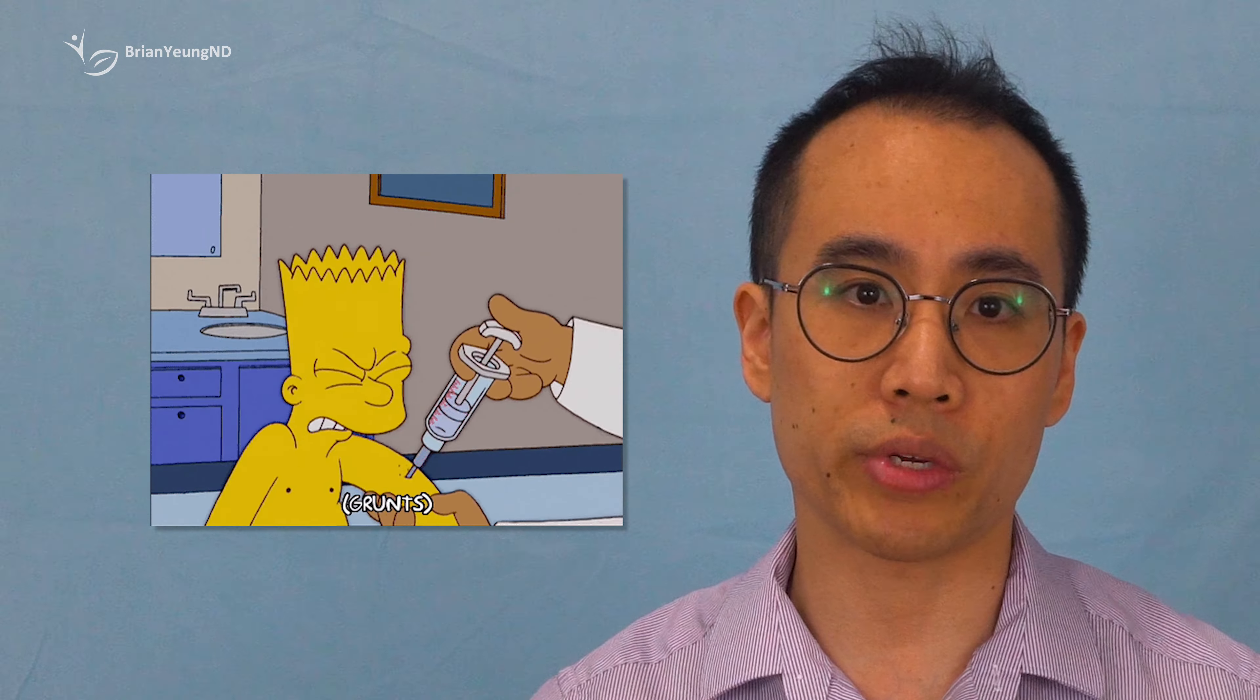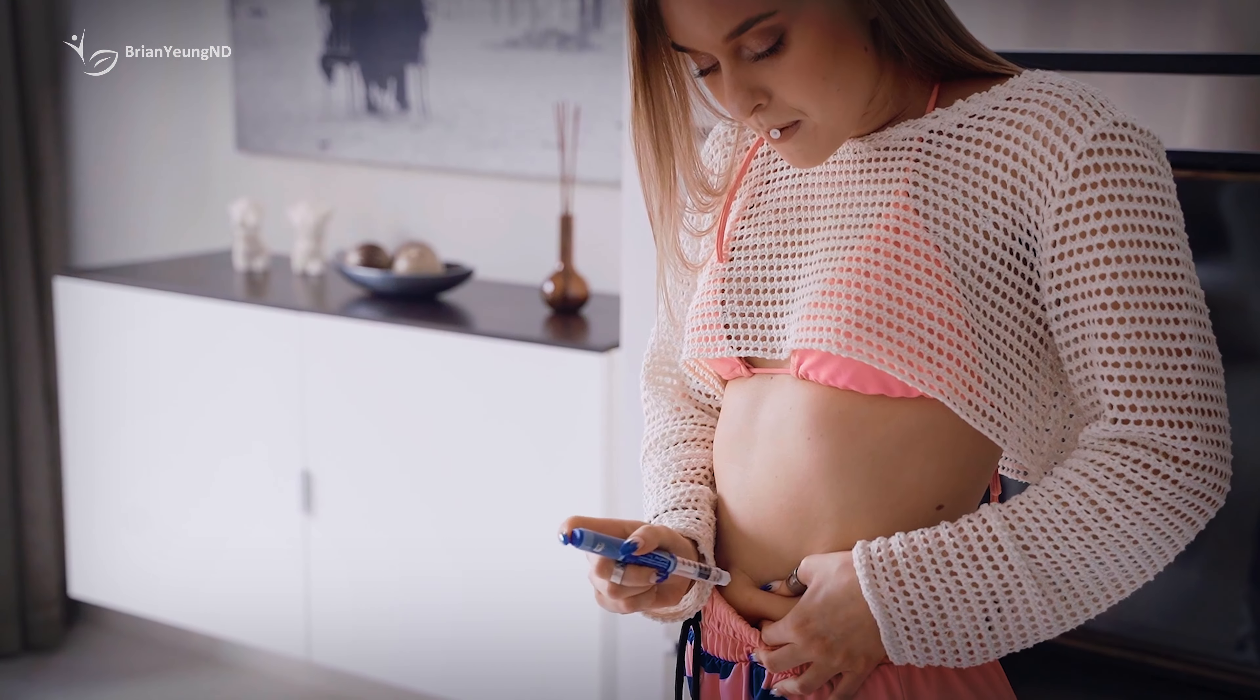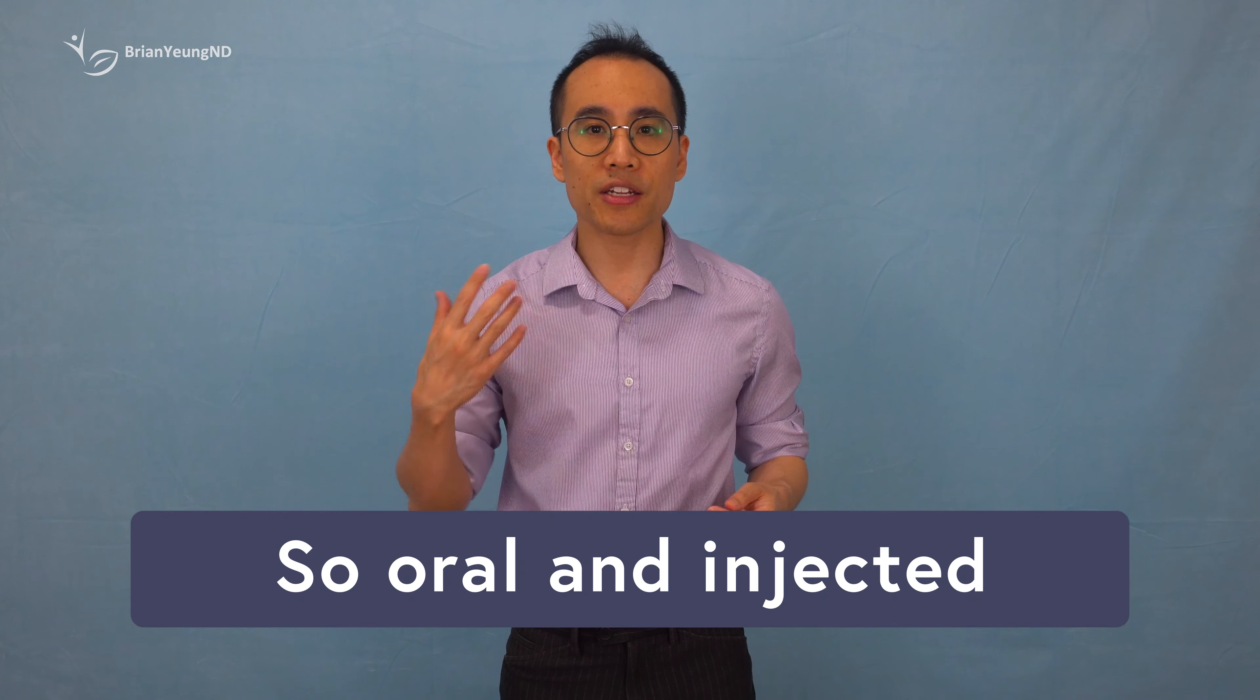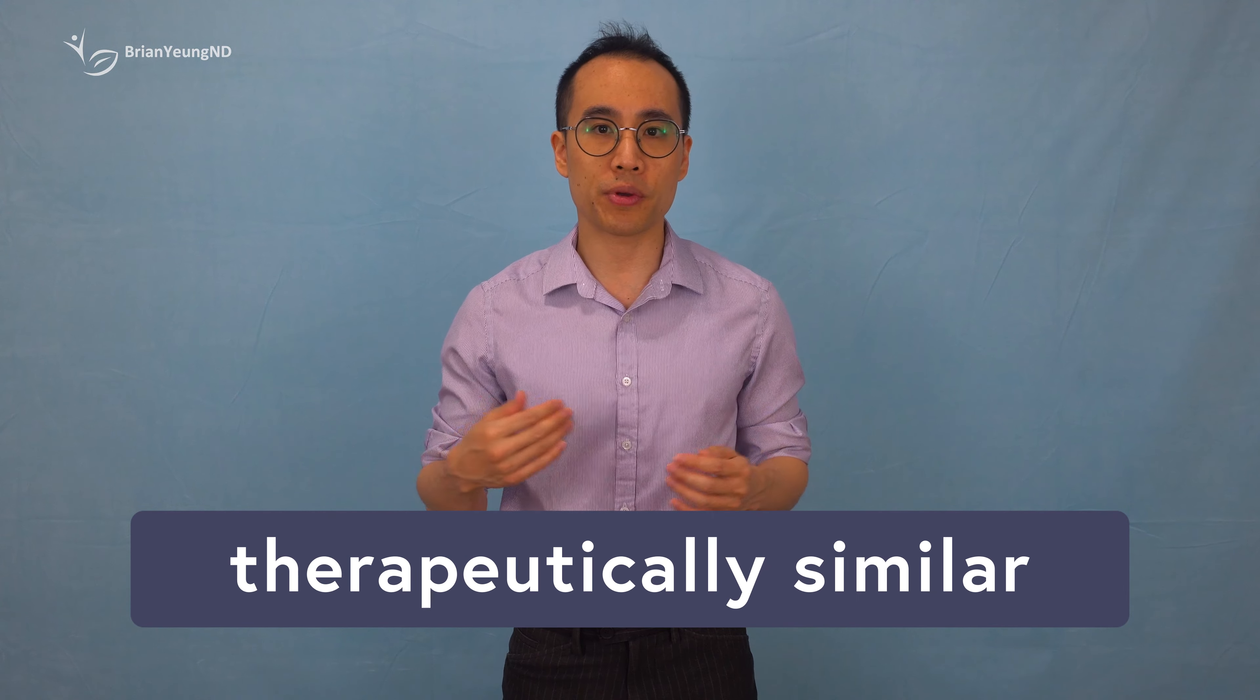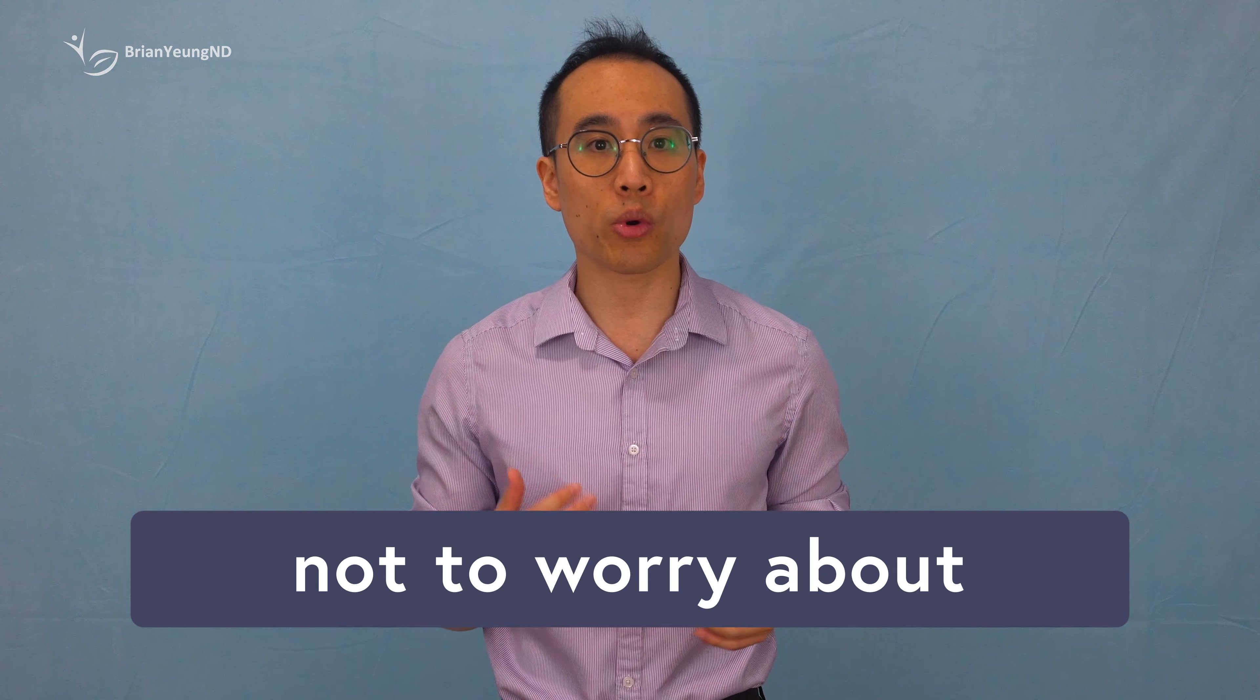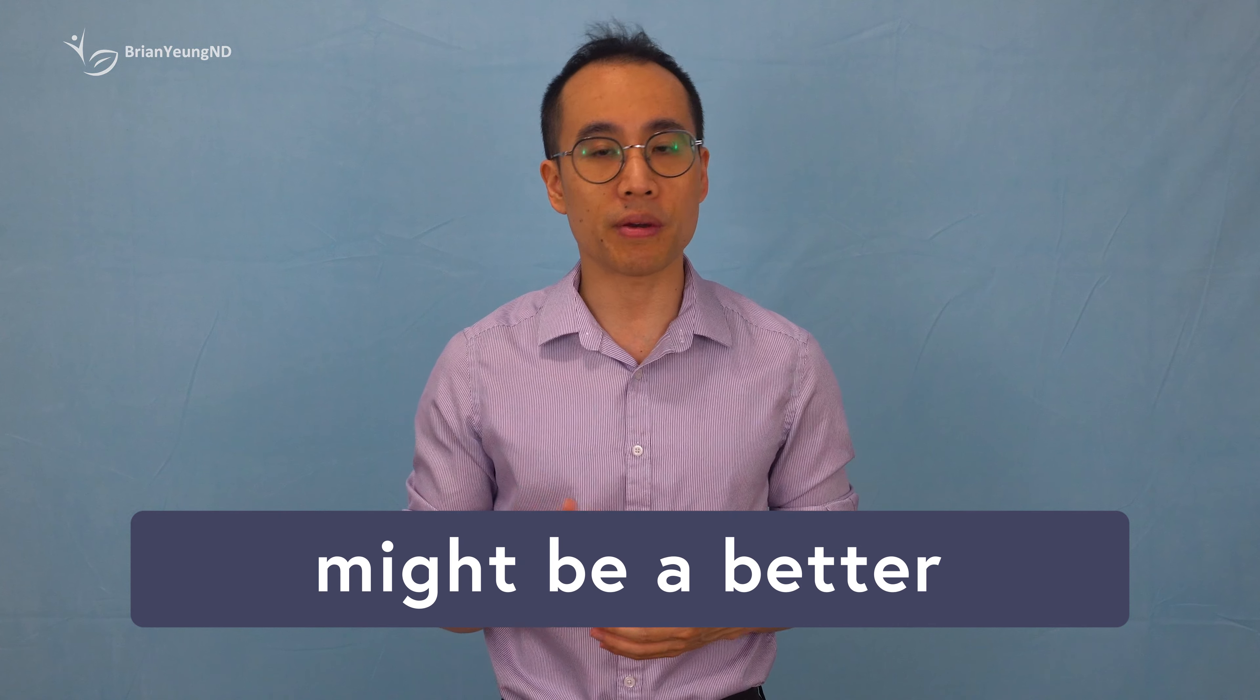In contrast, injected semaglutide like Ozempic or Wegovy is easier to use. It requires just one injection per week with no strict rules about food or water. This makes it more convenient and ensures nearly 100% absorption regardless of your eating habits or schedule. So oral and injected semaglutide are therapeutically similar if used correctly. However, if you prefer not to worry about the strict dosing instructions, the injected versions might be a better option for you.